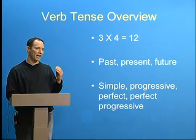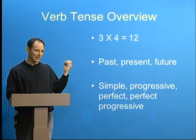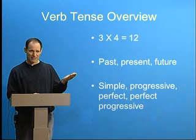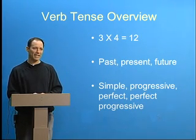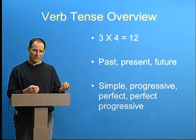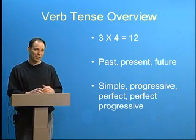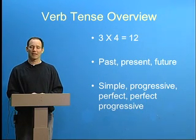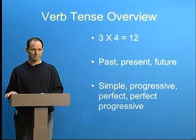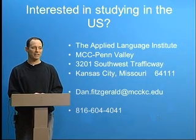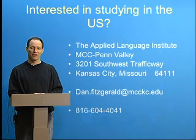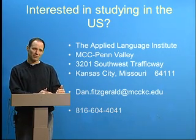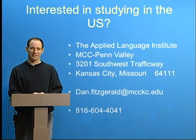So, once again, we have three times four equals twelve — twelve verb tenses in English. Our three are our time frames: past, present, future. And the four are the aspects, which are the relationship to the time frame: simple, progressive, perfect, and perfect progressive. Thank you. I hope that gives a general idea of how the verb tenses are used, so now that you understand how the whole system works, when you study each verb tense individually, it will make a little bit more sense. Thank you.